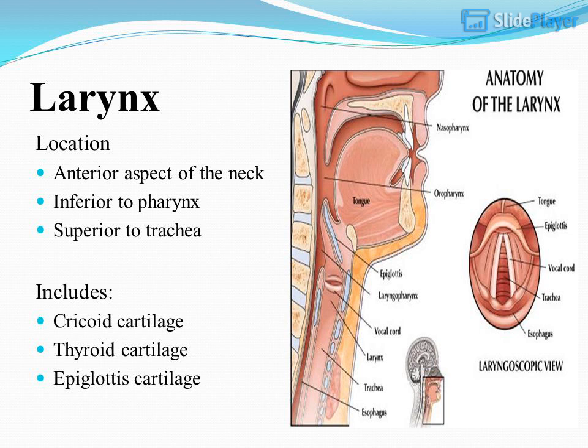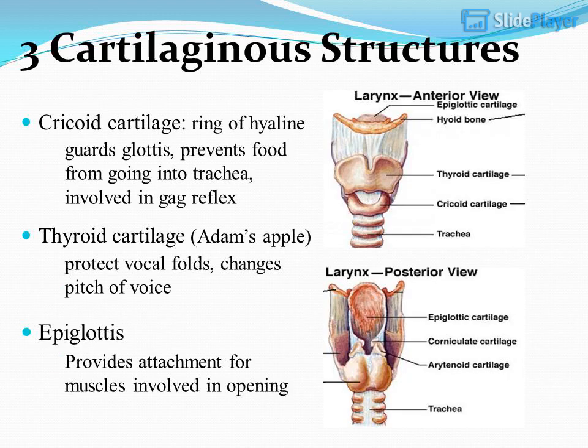The larynx is inferior to the pharynx and superior to the trachea. It includes the cricoid cartilage, thyroid cartilage, and epiglottis cartilage — three cartilaginous structures. Cricoid cartilage is a ring of hyaline. Thyroid cartilage is the Adam's apple. The epiglottis guards the glottis, prevents food from going into the trachea, and is involved in the gag reflex. It also protects the vocal folds and changes the pitch of voice.